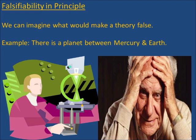Theory 1 says there is a planet between Mercury and Earth. This theory is falsifiable in principle. It's falsifiable because we can imagine what would make it false. For example, imagine we look through a telescope in the area between Mercury and Earth. Imagine we did this for years, and we even traveled there in a space shuttle, but we never saw a planet. If that happened, the theory would be false. Since we can imagine what would make it false, the theory is falsifiable in principle — falsifiable in thought.